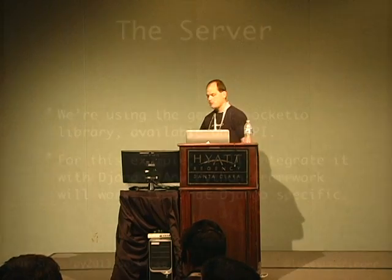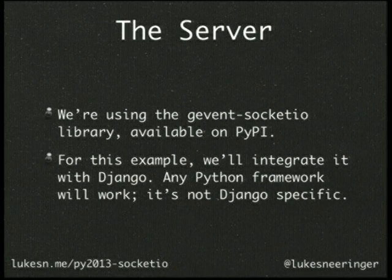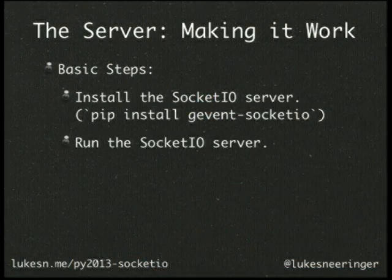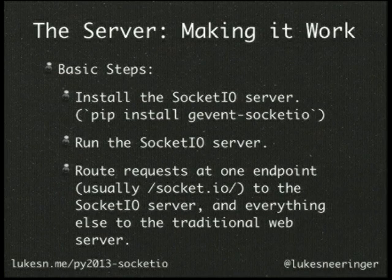We're using the gevent-socketio library, available on PyPI. I'm going to show you an example that's available on GitHub. For this example we're going to integrate with Django, though there is nothing Django-specific about doing this — you can use Flask, Pyramid, Web2Py, or nothing at all. The basic steps are: install the Socket.io server, run the Socket.io server, and route requests. The Socket.io server is generally set up to take requests at a specific endpoint, usually slash socket.io.